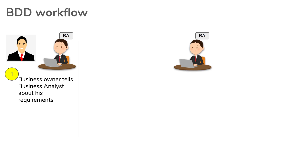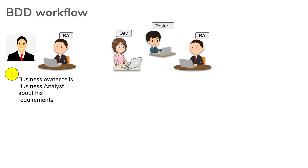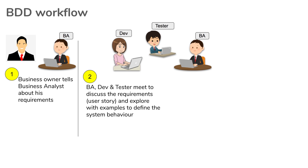The business analyst then does a meeting with the representatives of the testing team and the development team where he discusses the user stories and examples. This is called the three amigos meeting, as we have seen in earlier sessions. All the questions can be raised by anyone in the team so that we can explore more on the features and the examples. Finally, we have some agreed examples to define the system behavior, and this is the process of discovery.